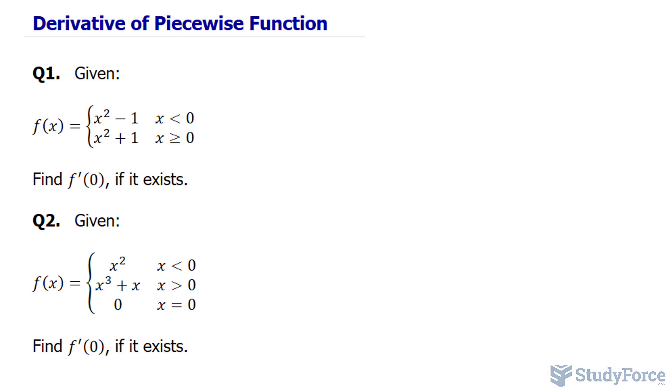In both examples, you're given a piecewise function and you're expected to find the derivative at a certain value if it exists. To answer these questions successfully, two conditions must hold true in sequence.